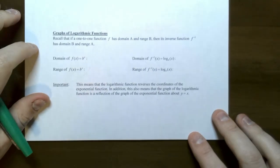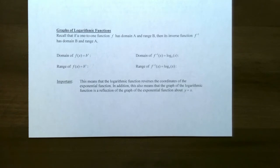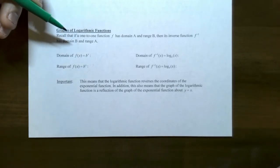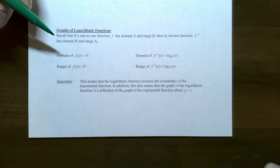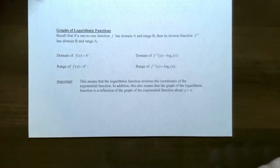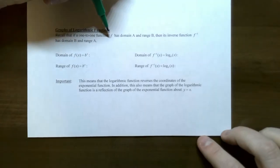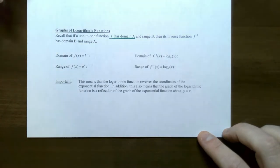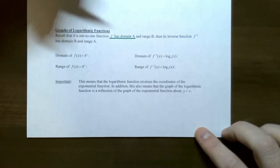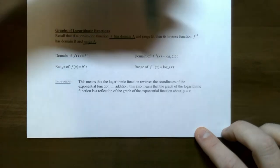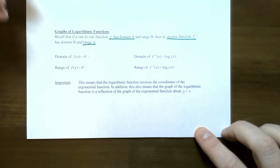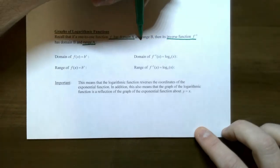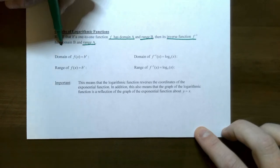Hi everyone, it's Professor Pemberton. In this video we're going to finish up our discussion on logarithmic functions. From the previous video we left off at how to graph logarithmic functions. We discussed the idea that if a function is one-to-one then it has an inverse function, and if a function has an inverse then the domain of f(x) is the range of the inverse function, and the range of f(x) is the domain of the inverse.